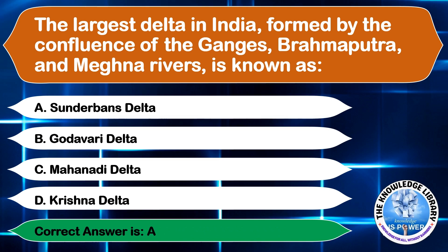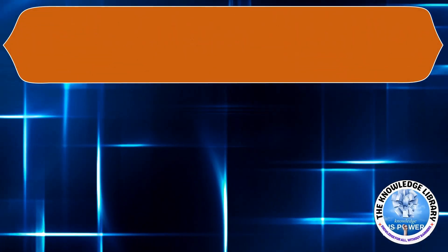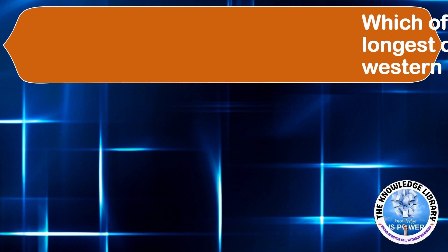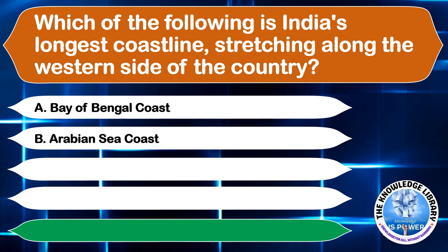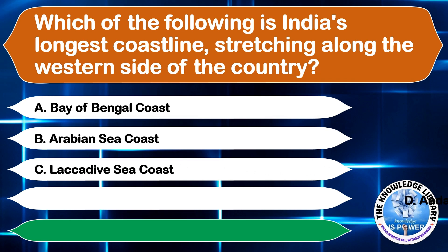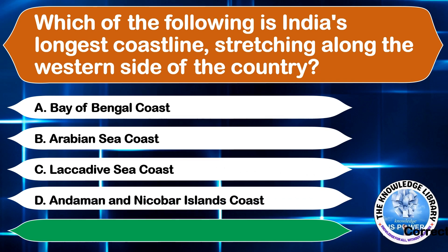Which of the following is India's longest coastline, stretching along the western side of the country? A. Bay of Bengal Coast, B. Arabian Sea Coast, C. Lakshadweep Sea Coast, or D. Andaman and Nicobar Island Coast. The correct answer is option B, Arabian Sea Coast.